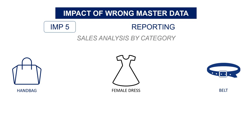Finally, bad master data can impact your analytics and reporting capabilities. Take the example of a report requested by top management: they want reports on sales per product category — like bags, ready-to-wear, accessories. These reports are used to build sales and operating planning, drive long-term strategy, or gain market insights. Problem: a large number of items have missing product categories in the master data, leaving several hundreds of items unlinked to any category. You cannot confirm the sales report is complete, and the impact can be huge — key strategic reports lose consistency and people may not trust the results.